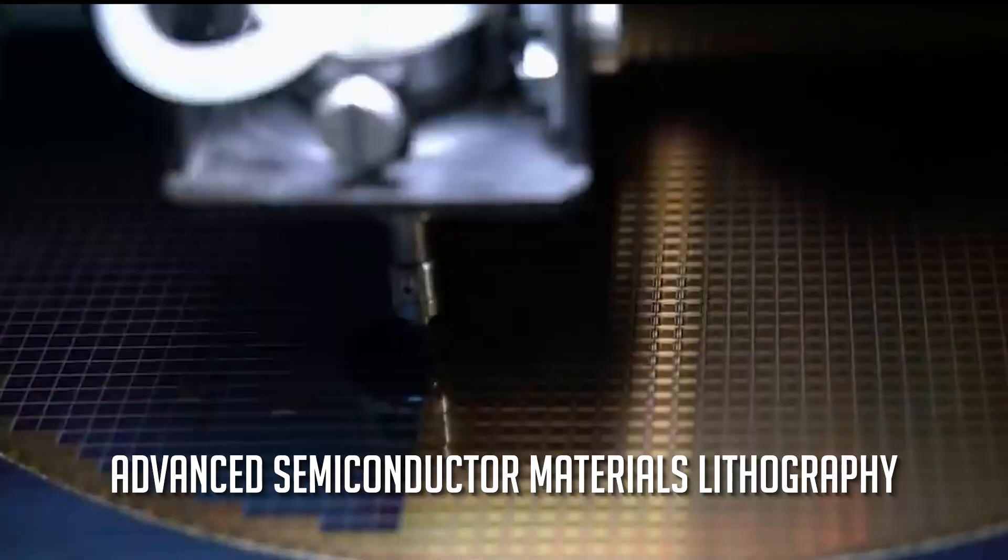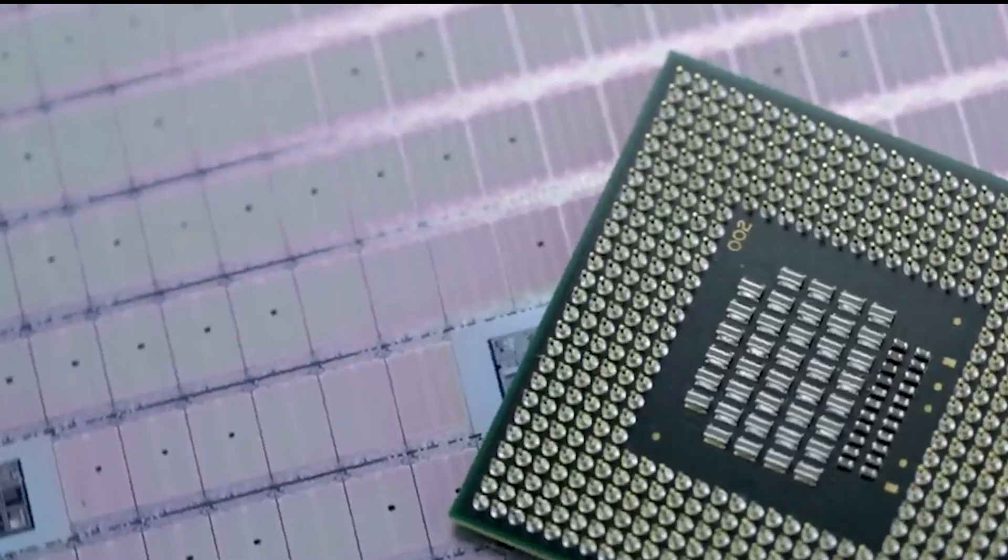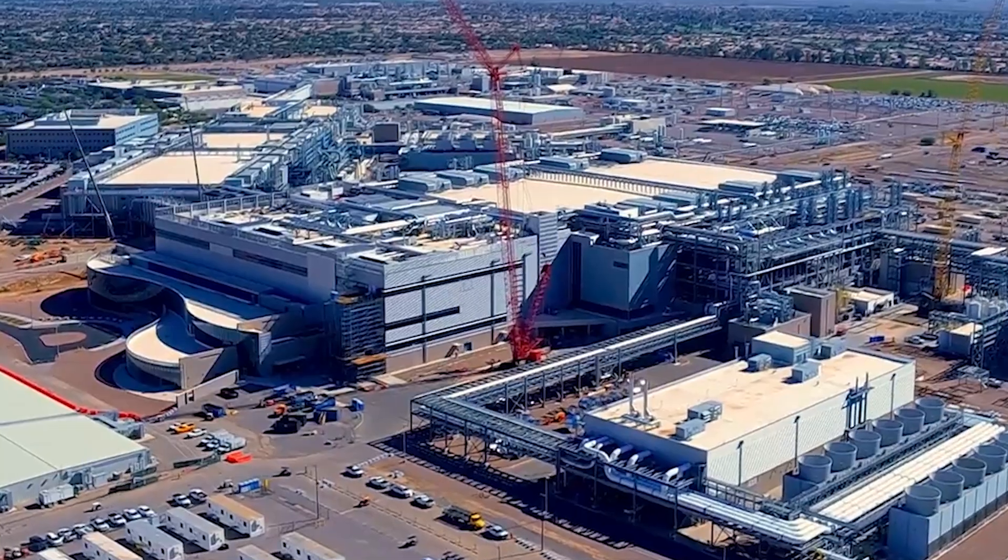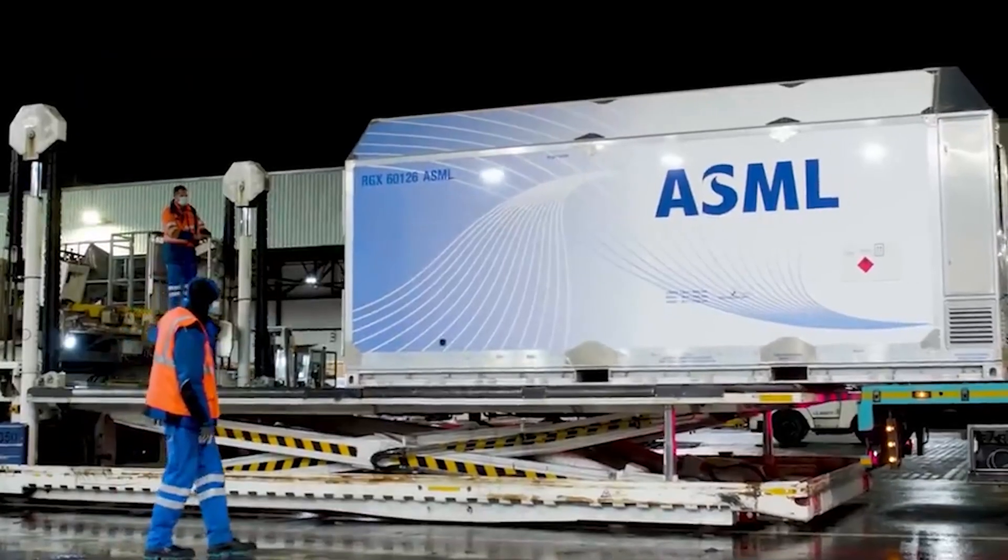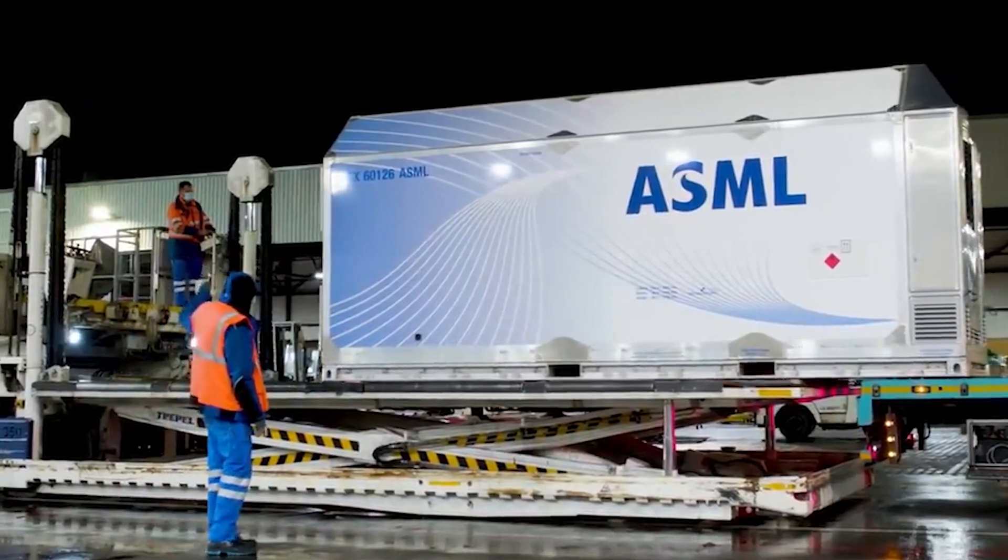Originally known as Advanced Semiconductor Materials Lithography, the Dutch multinational corporation ASML is the world's largest supplier in the semiconductor industry, and the sole supplier of extreme ultraviolet lithography photolithography machines.